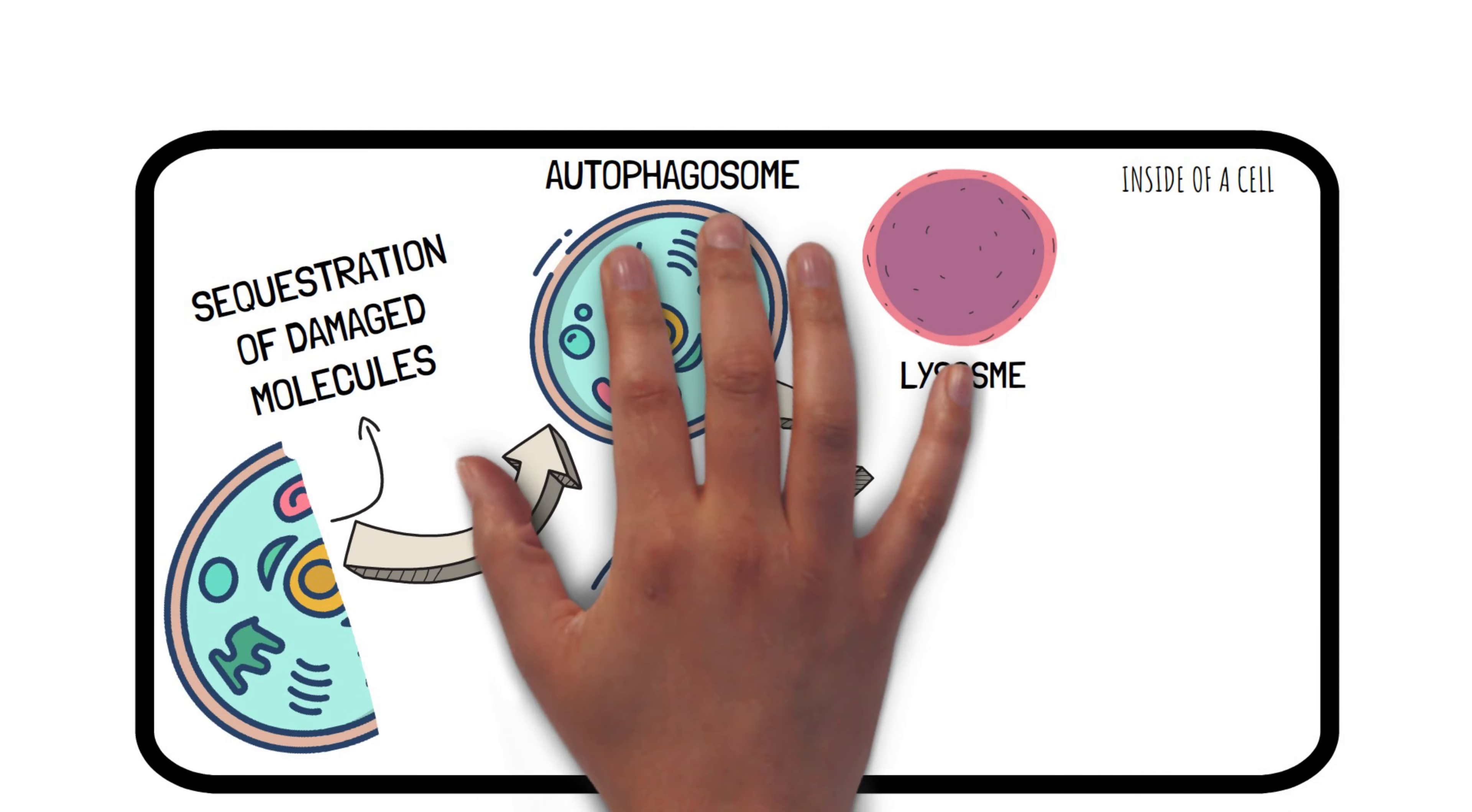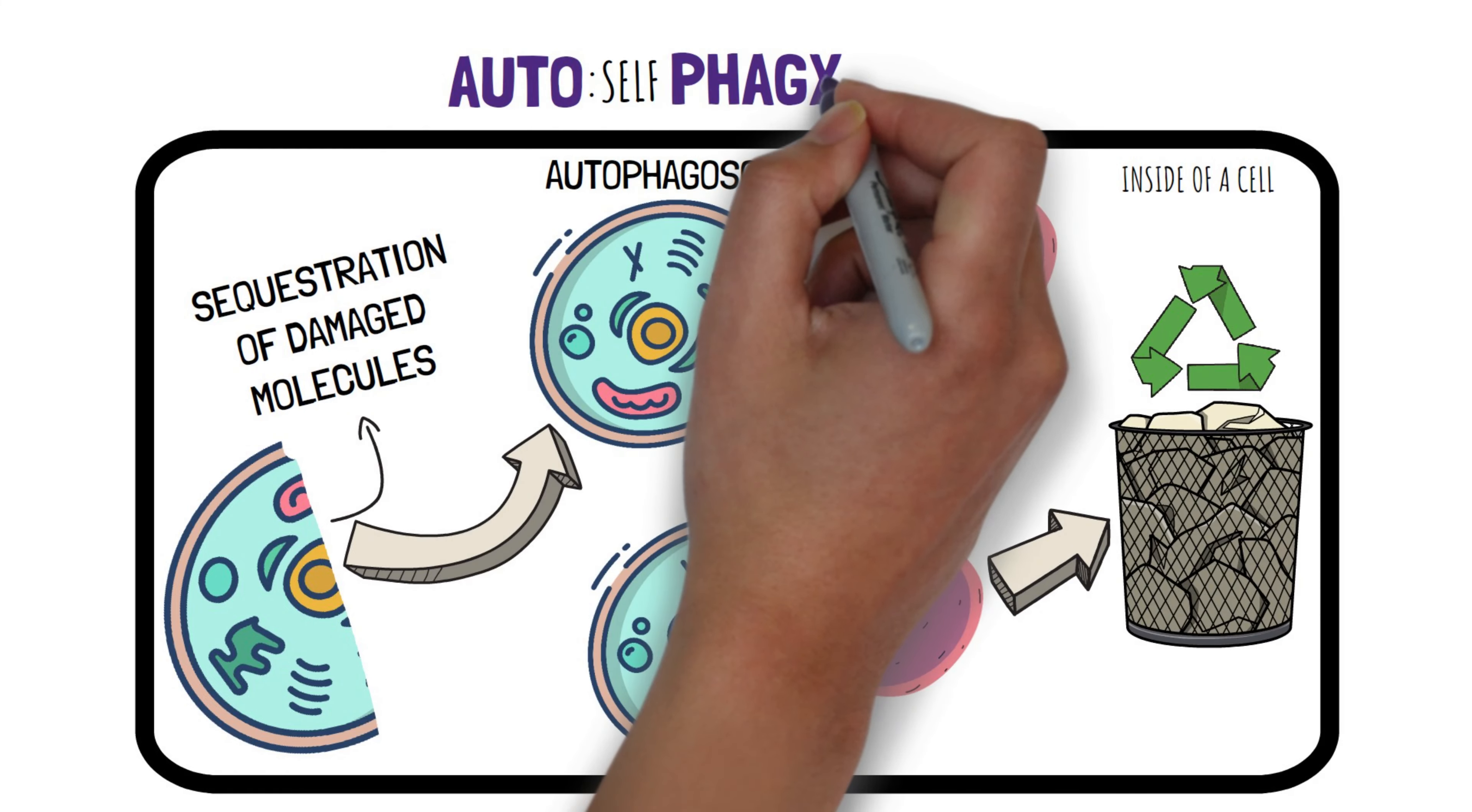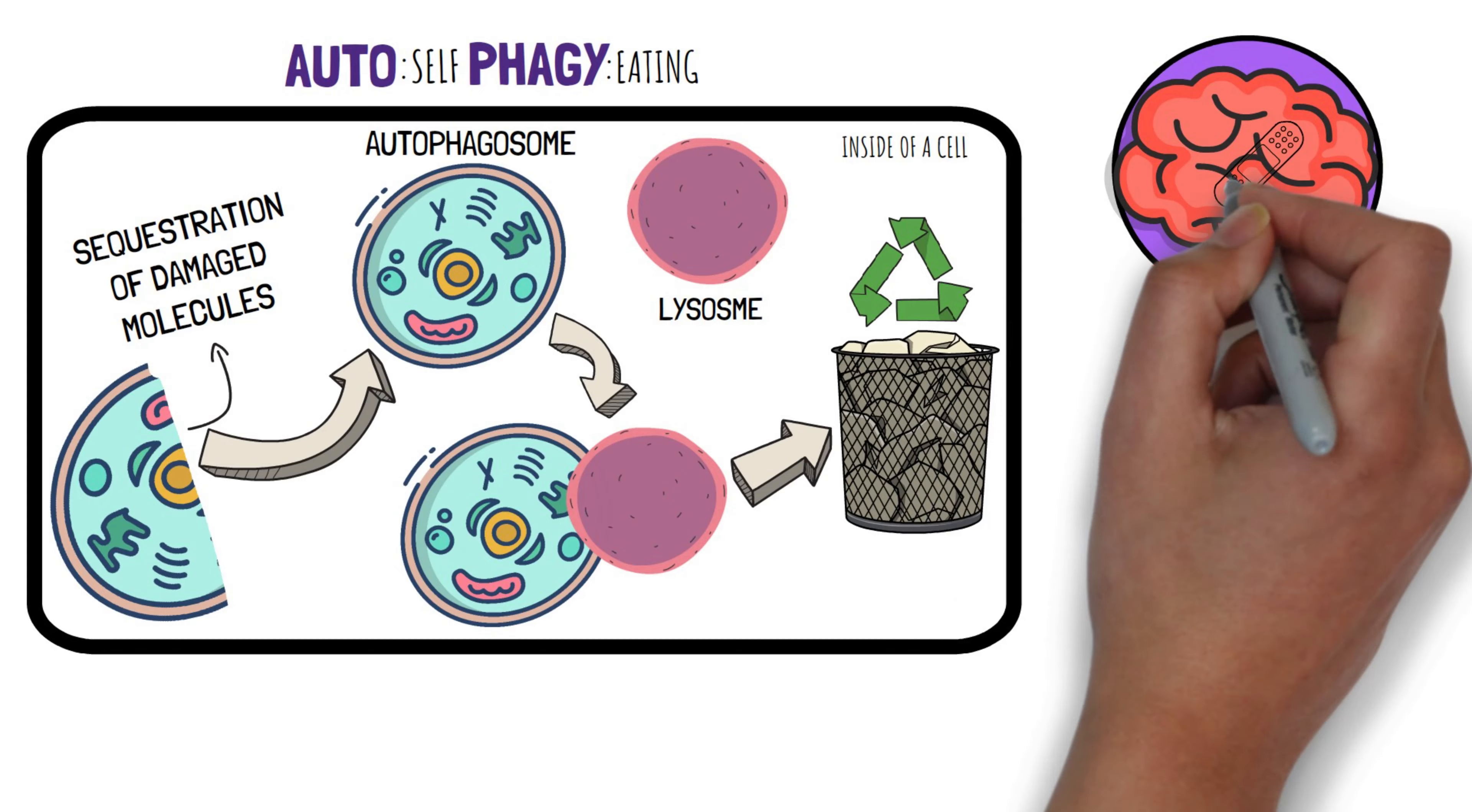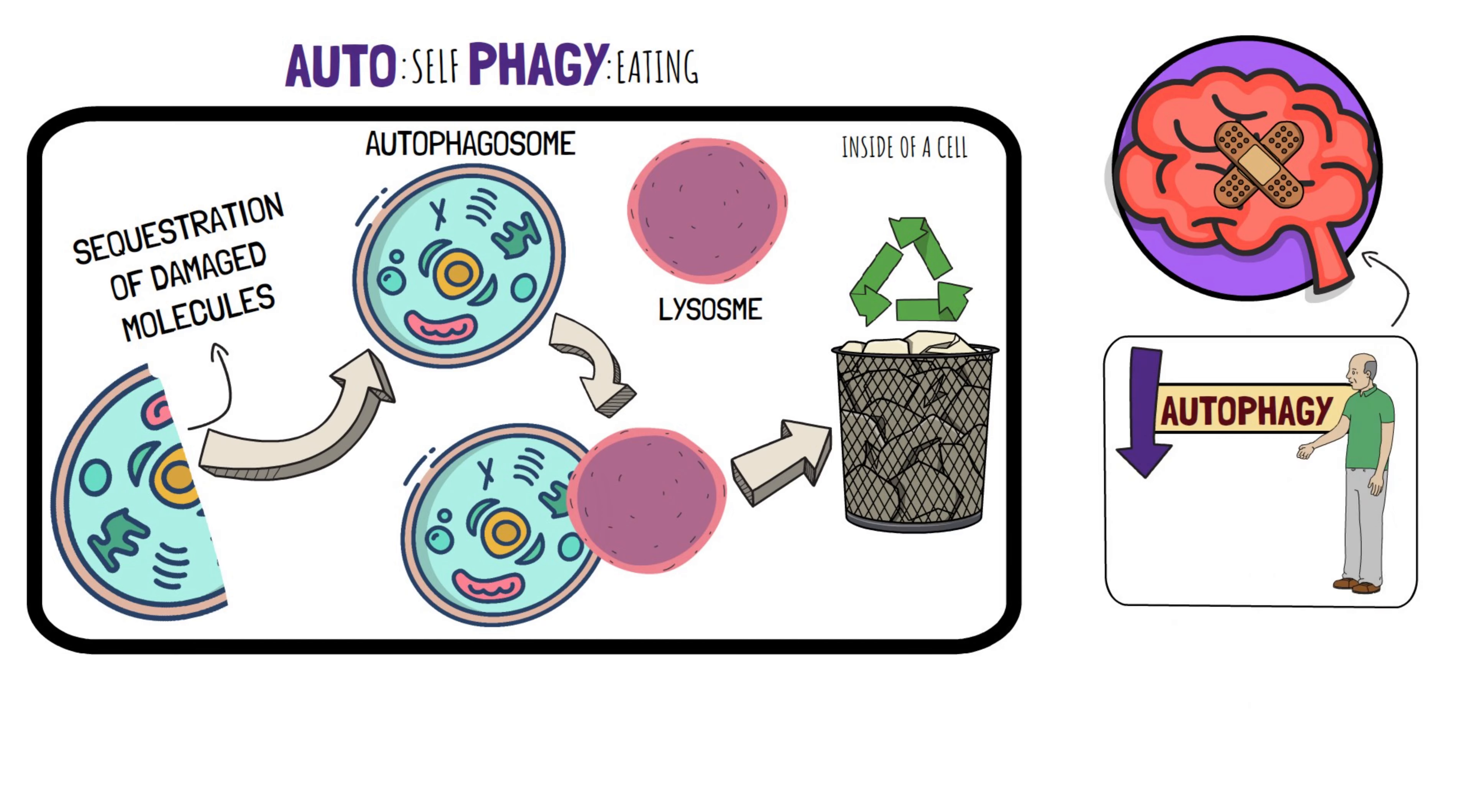Autophagy is crucial for refreshing cells and tissues. It gets rid of damaged parts, especially misfolded proteins. When cells can't or don't do autophagy, it leads to problems like neurodegenerative diseases. These diseases often occur because autophagy decreases as you age.